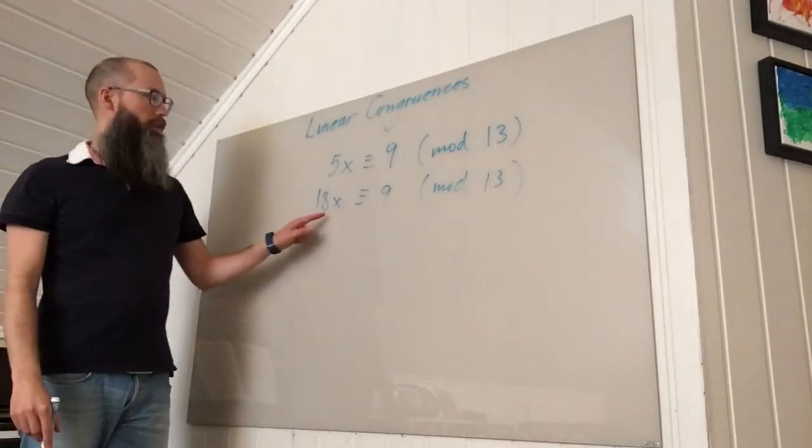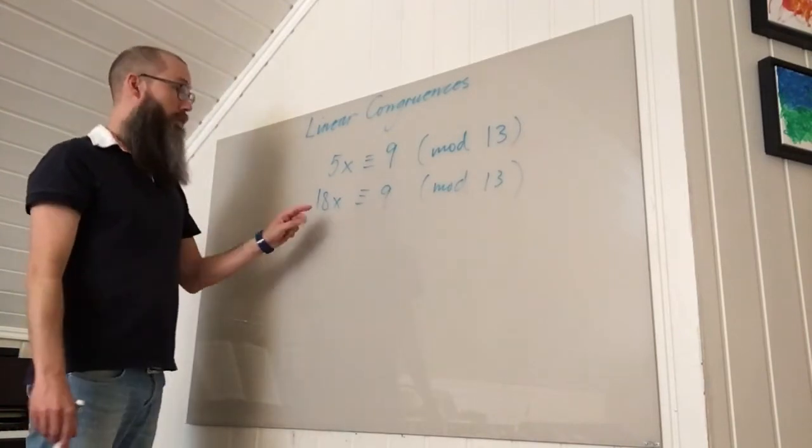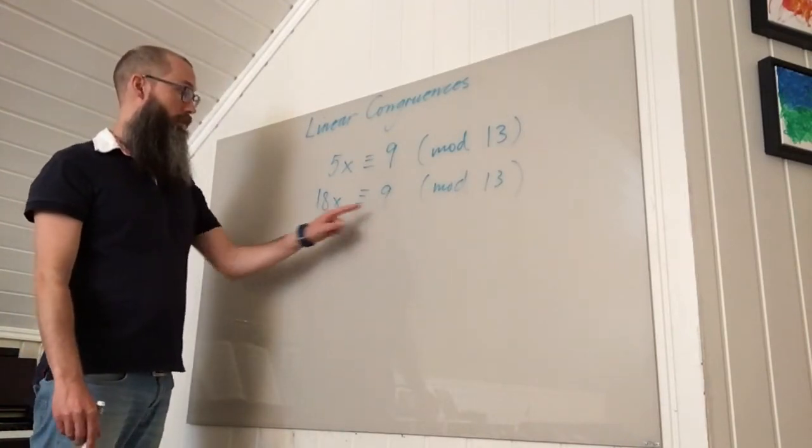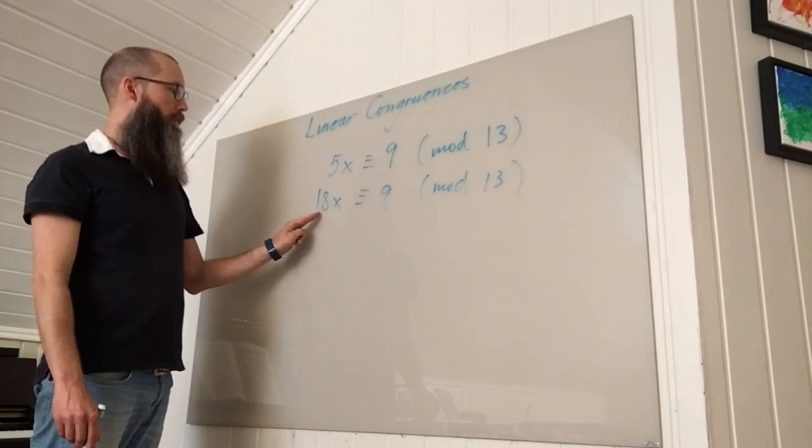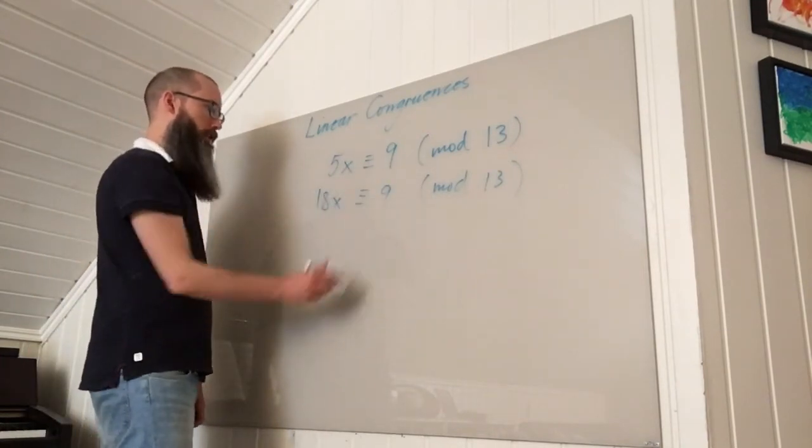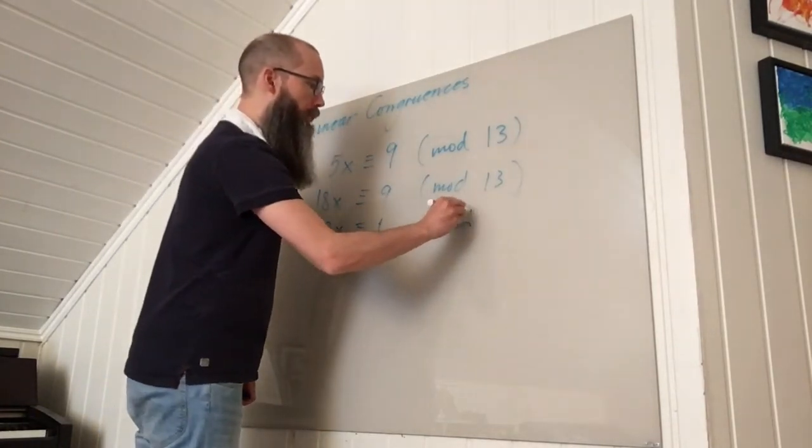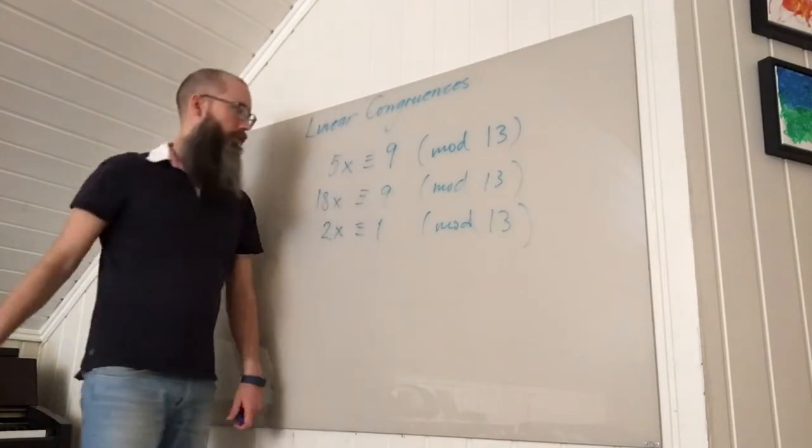This gives at least a common factor—actually a common factor of 9, which is coprime to 13. So I can divide through by 9 without changing the modulus. So 2x is congruent to 1 mod 13.